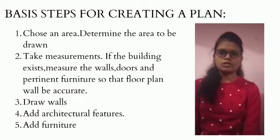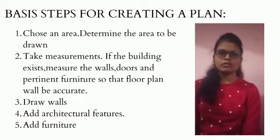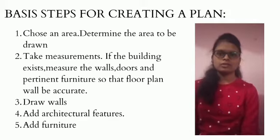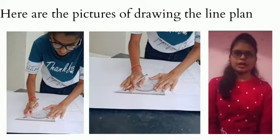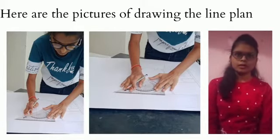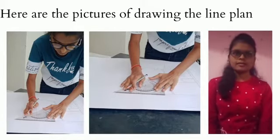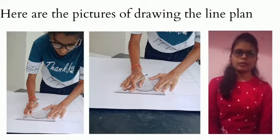Third, draw walls. Fourth, add architectural features. Fifth, add furniture. Here are pictures of drawing the plan, and this plan was drawn by another group member, Rutuja Mehetre.